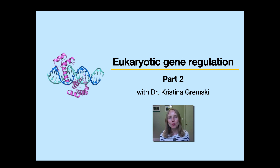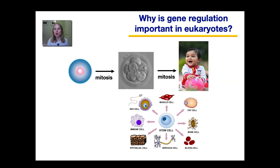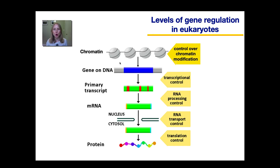Hi class! Welcome to part 2 of the lesson on eukaryotic gene regulation. In part 1, I introduced you to why gene regulation is important in eukaryotes — how in multicellular organisms, the variety of cells we see are largely the result of specific genes being turned on and other genes being turned off. We initially focused on control over chromatin modification, but in part 2 we will focus on transcriptional control.